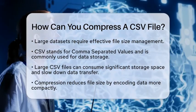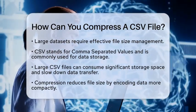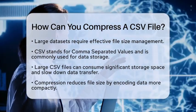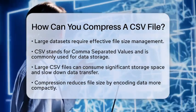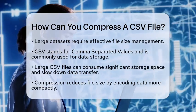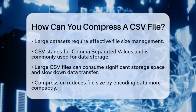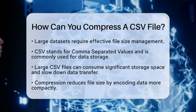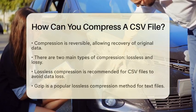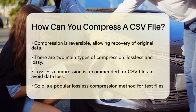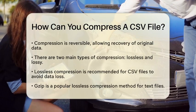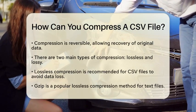First, let's talk about what compression means. Compression reduces the size of a file by encoding its data more compactly. This process is reversible, so you can get back the original data from the compressed version. There are two main types of compression: lossless and lossy. For CSV files, lossless compression is the way to go, as this ensures that no data is lost during the compression process.